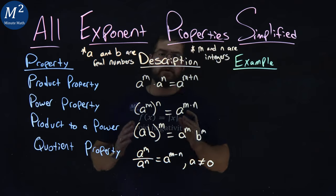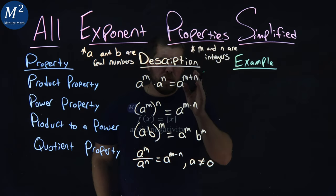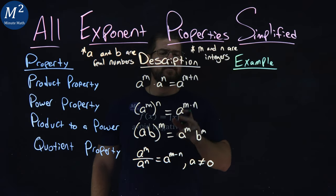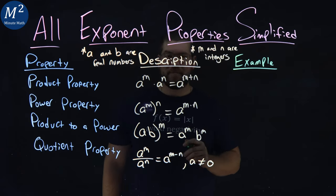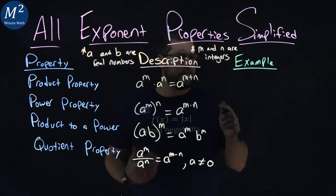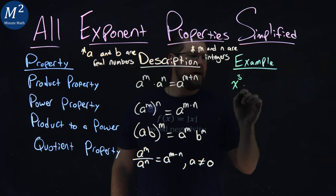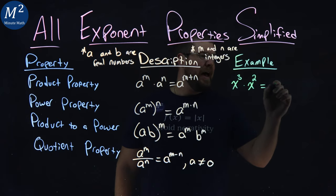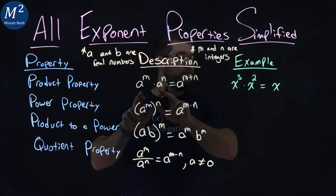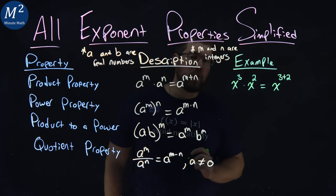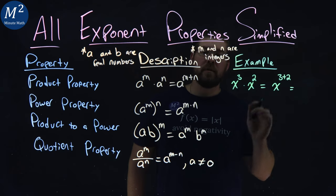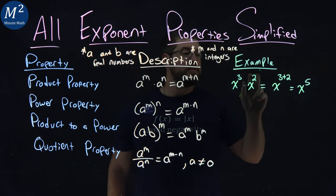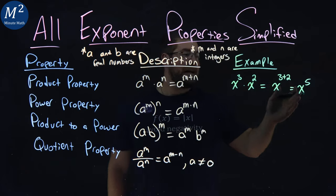Let's dive into our first property: the product property. It states that a to the m power times a to the n power equals a to the m plus n power. For example, x to the third power times x to the second power — since they have the same base, we add the exponents: three plus two gives us x to the fifth power.